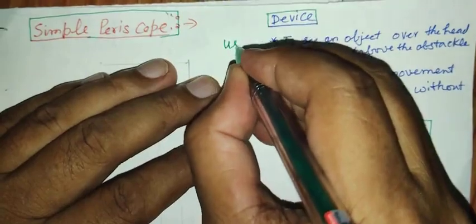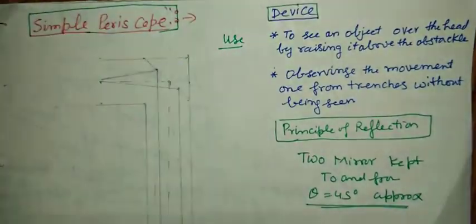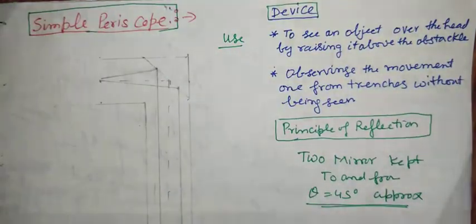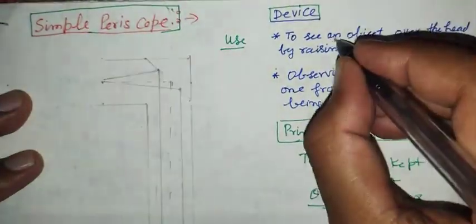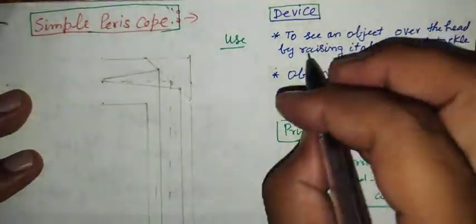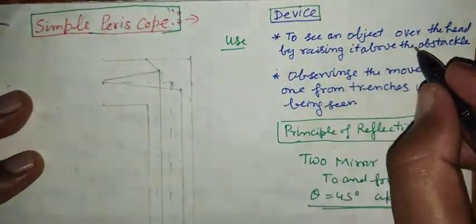The use of this periscope is very common. It is used to see an object over the head by raising it above the obstacle.